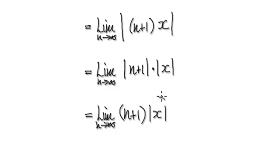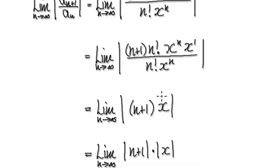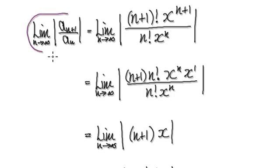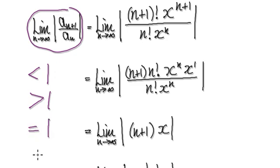So remember the ratio test, with the ratio test, we always need to compute this value here. If this value here is less than 1, then we know it's going to converge. If it's greater than 1, it will diverge. If it equals 1, it's inconclusive.